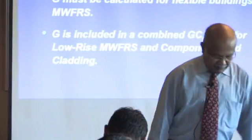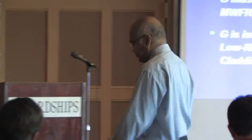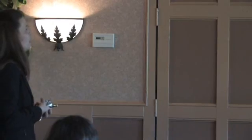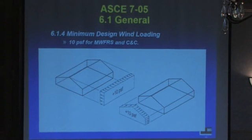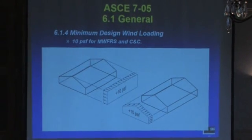ASCE 7-05 has brand new commentary in the wind chapter that tells you how to compute period. Going through Chapter 6 of ASCE 7-05, right up front is Section 6.1.4 — a provision that a lot of people will overlook and may not even know is there. It is really a standalone requirement, not related to the simplified method, the analytical method, or the wind tunnel method.